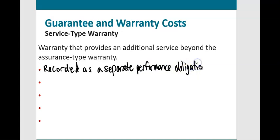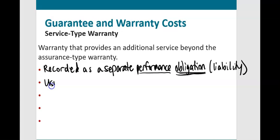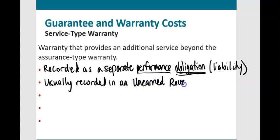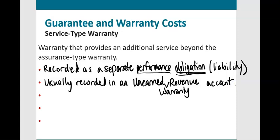A performance obligation — something you have to do in the future — is a liability. Service type warranties are recorded as unearned revenue. When Apple sells a phone and charges $50 for a service type warranty, it records that $50 into unearned warranty revenue. As time passes during the warranty period, the company reduces unearned warranty revenue and increases warranty revenue, usually on a straight-line basis.